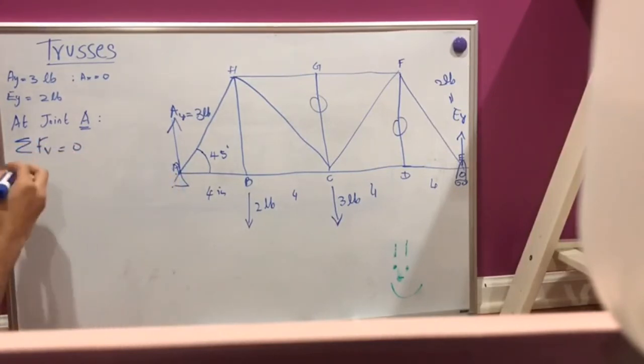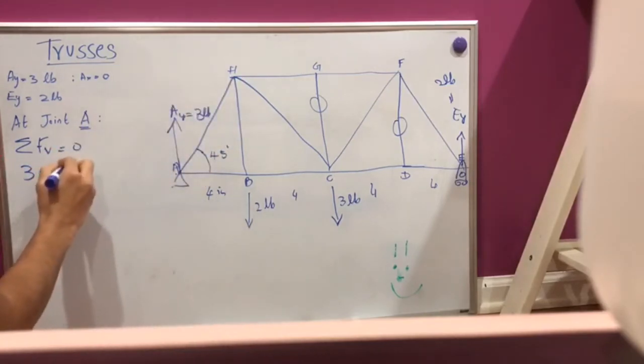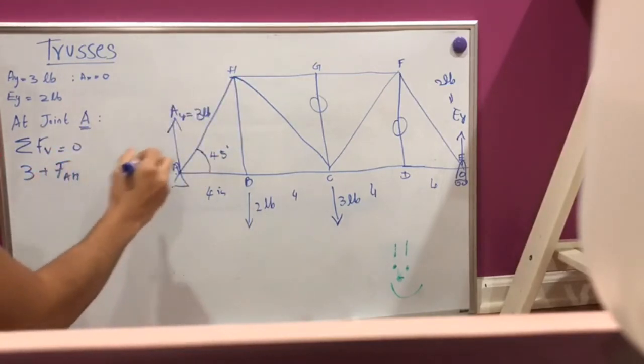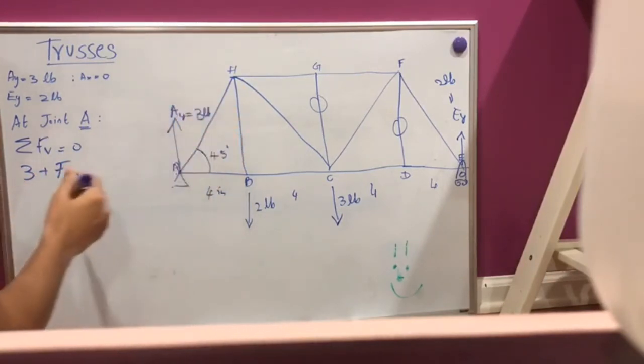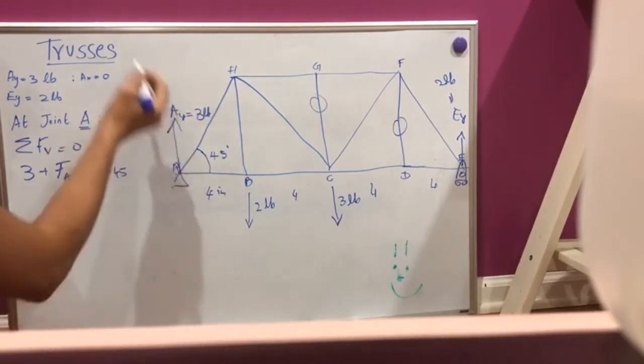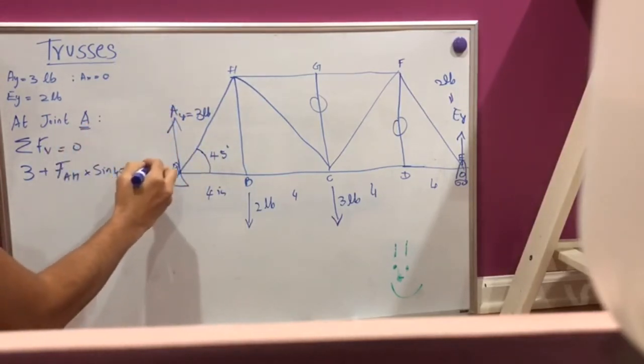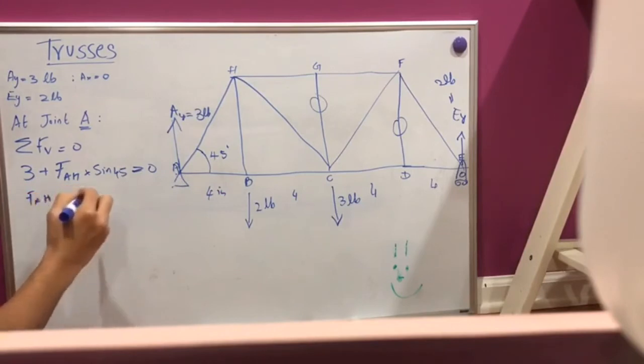So all the forces in the vertical are going to be zero at joint A. So AY, which is 3, plus FAH. FAH is the force in the segment AH into sine 45, because we're just taking care of the vertical axis right now. So FAH is going to be zero. In that case, FAH is going to be minus 3 into root 2. Cosine 45 is going to be minus 2.